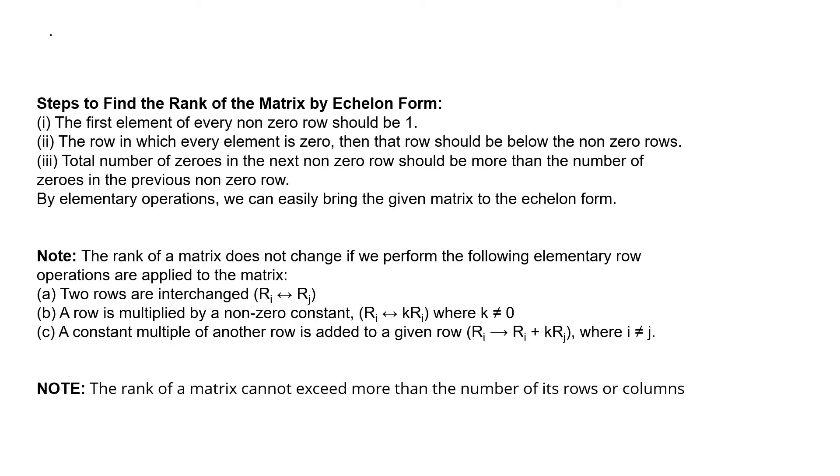Let's see the steps to find the rank of the matrix by echelon form. The first element of every non-zero row should be 1. The row in which every element is 0 should be below the non-zero rows. Total number of zeros in the next non-zero row should be more than the number of zeros in the previous non-zero row.